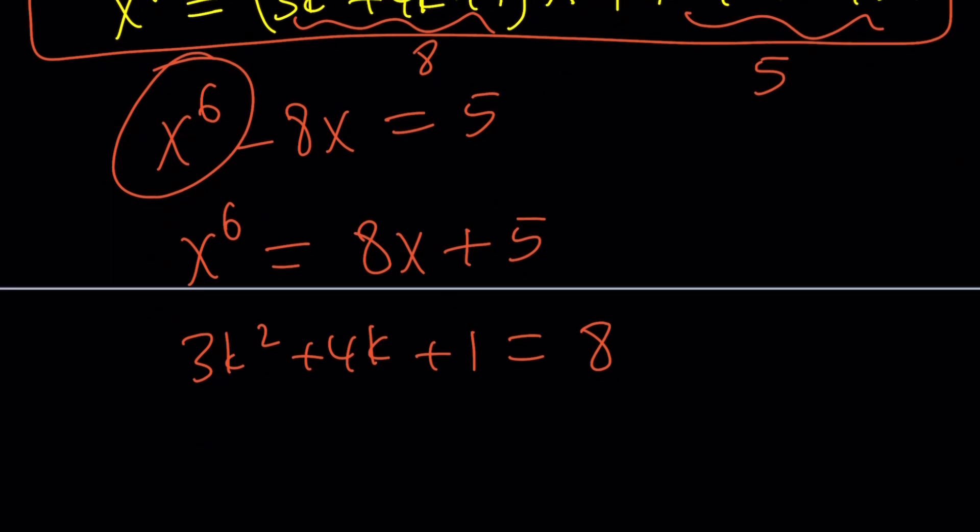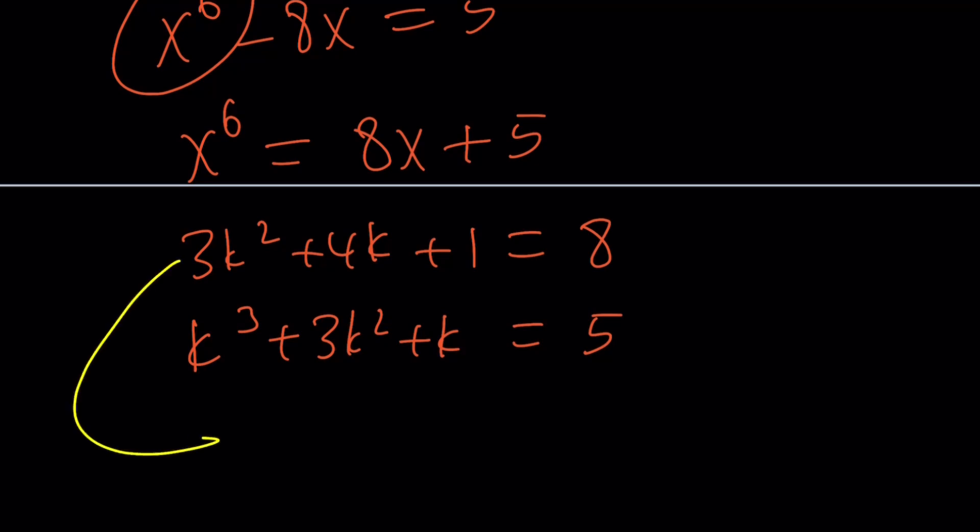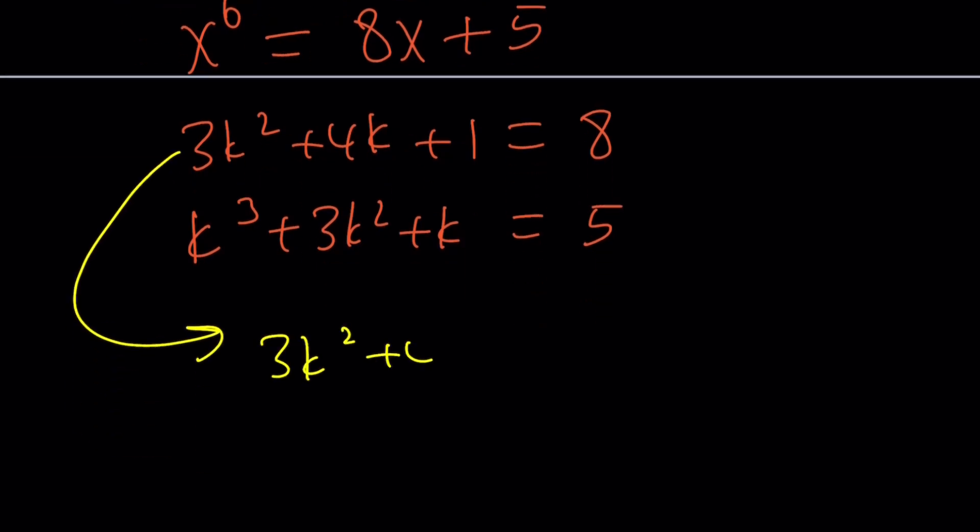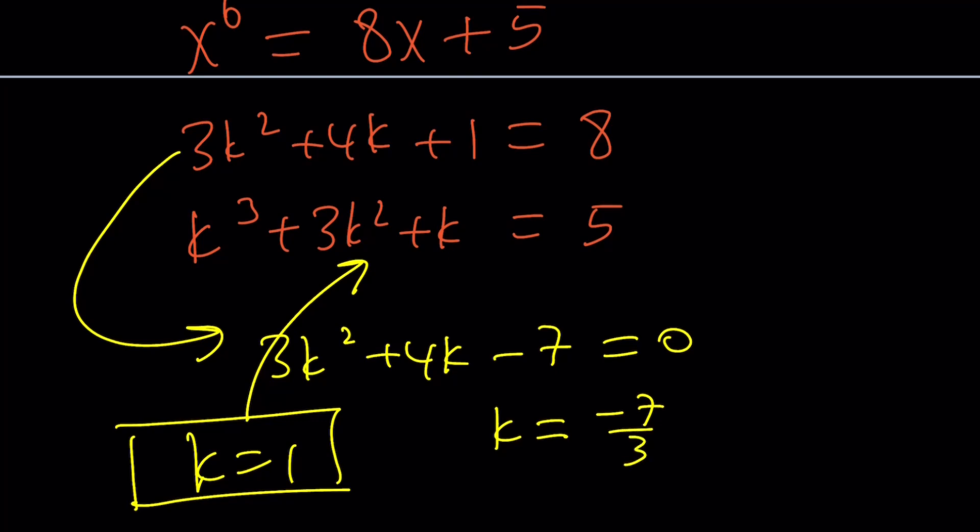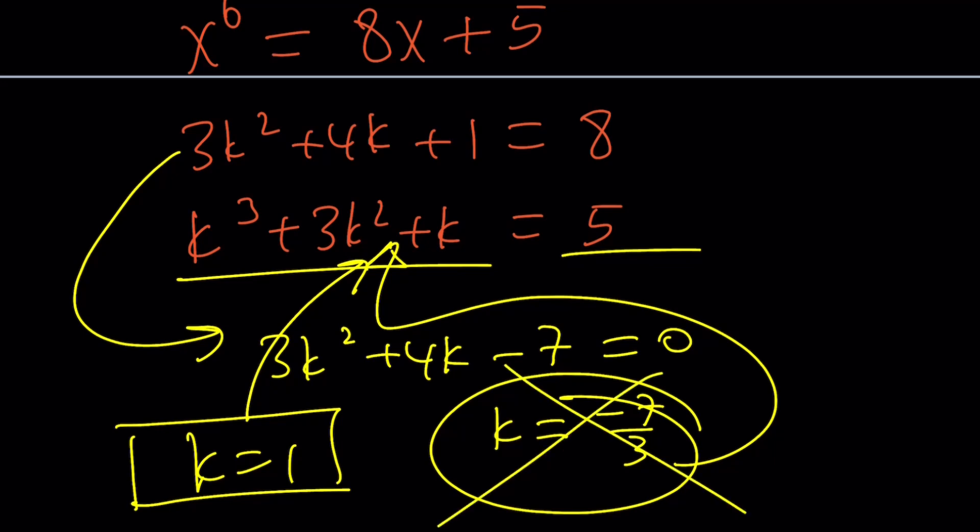We set 3k^2 + 4k + 1 = 8, which gives 3k^2 + 4k - 7 = 0. Check the sum of the coefficients: 3 + 4 - 7 = 0, so k = 1 is a solution. And it satisfies the second equation k^3 + 3k^2 + k = 5. The other root from the quadratic is -7/3, but that doesn't satisfy the second equation. So k = 1, and that's the answer.